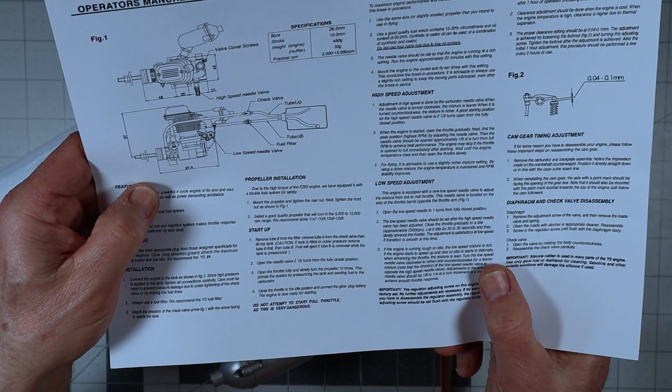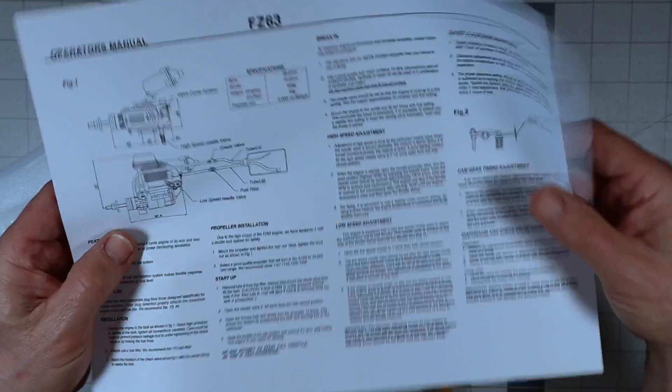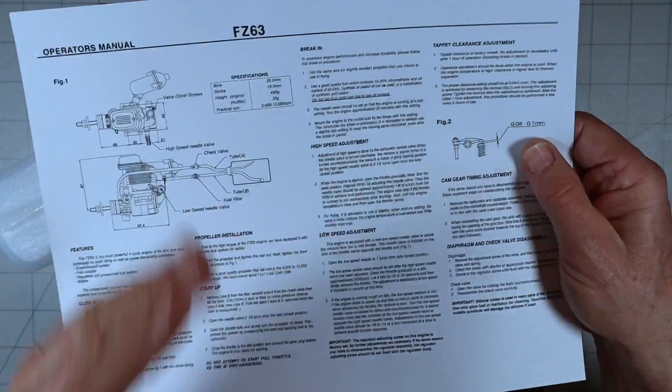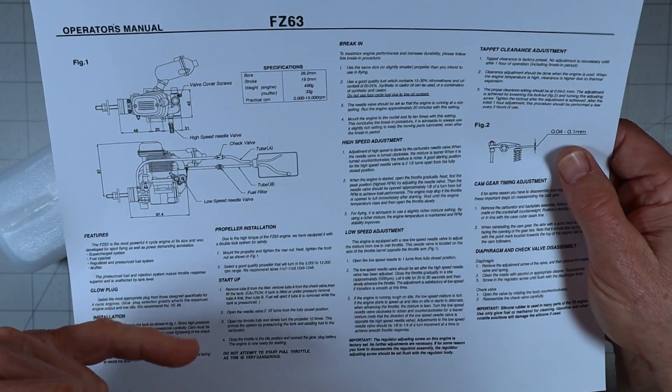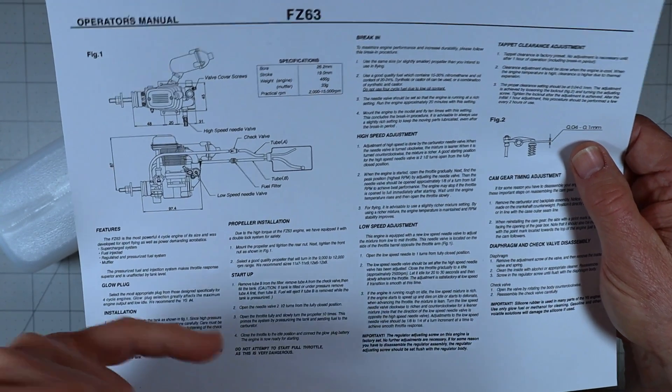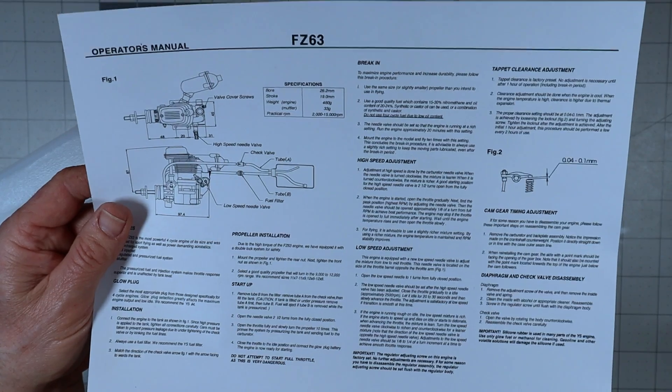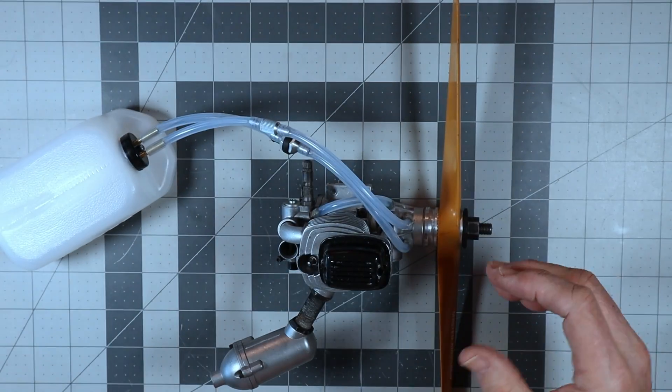Close the throttle to the idle position and connect the glow plug battery. The engine is now ready for starting. I could have sworn that I had one of these engines, a larger one that said, after you prime it 10 times with the throttle open, close it and then do it another 10 times. I know I actually did that on one of my videos. But anyway, so this engine is ready to go.